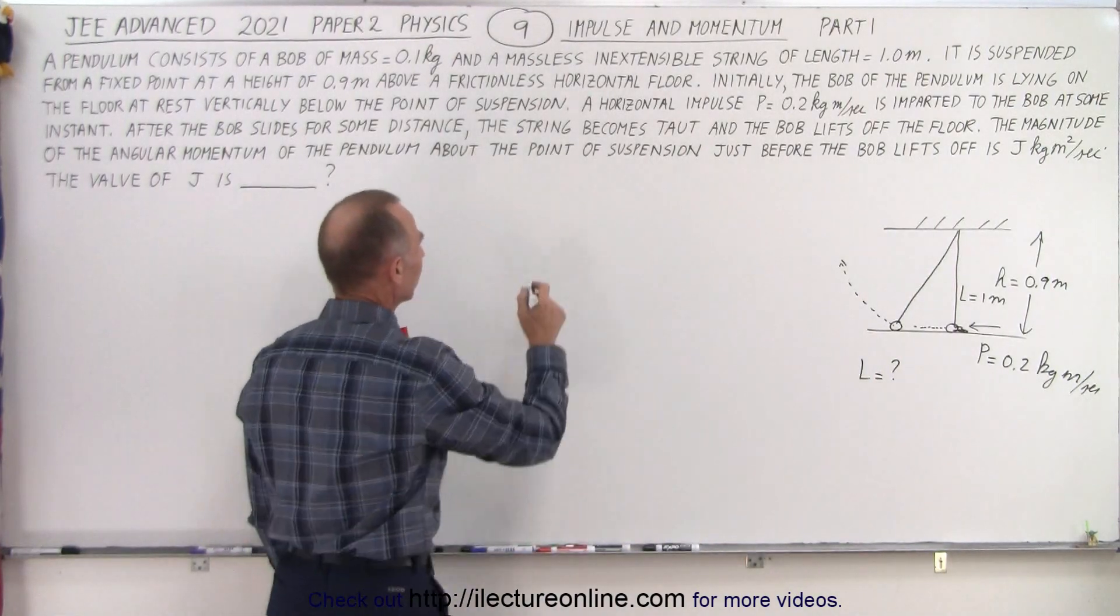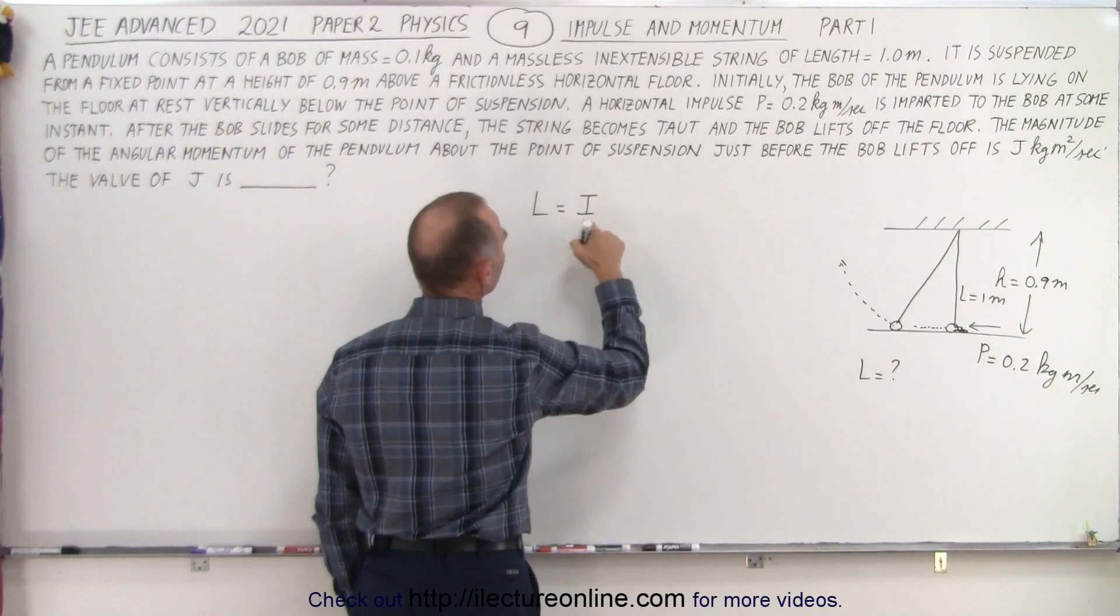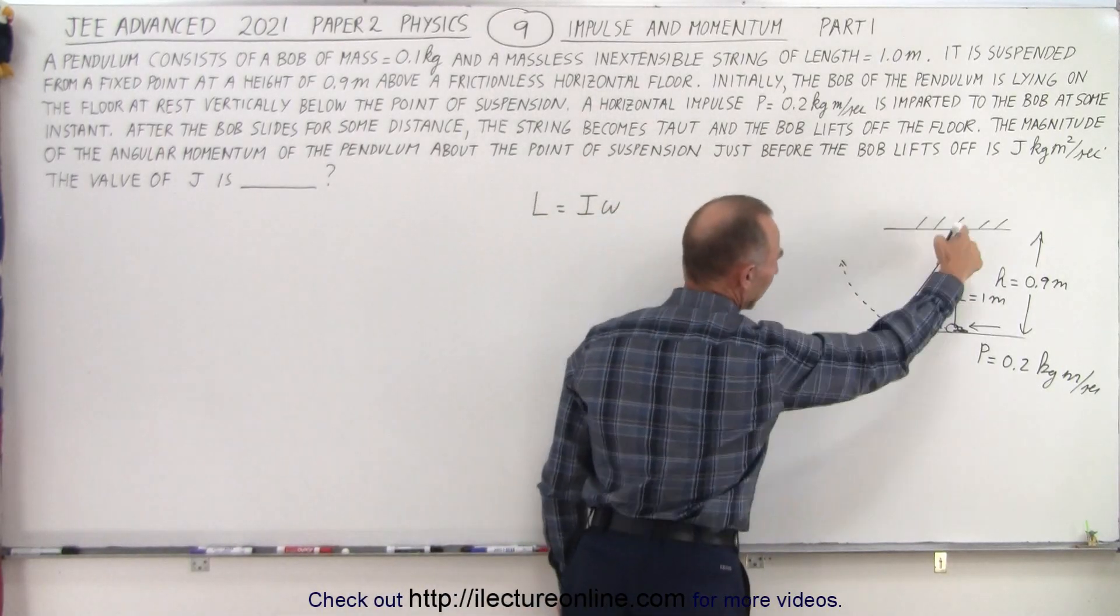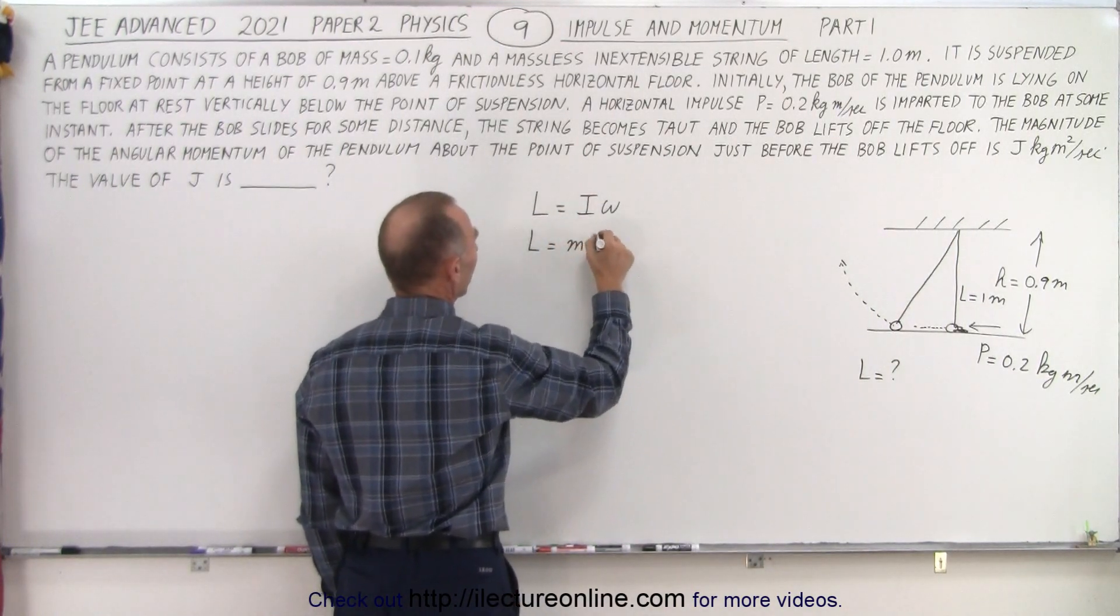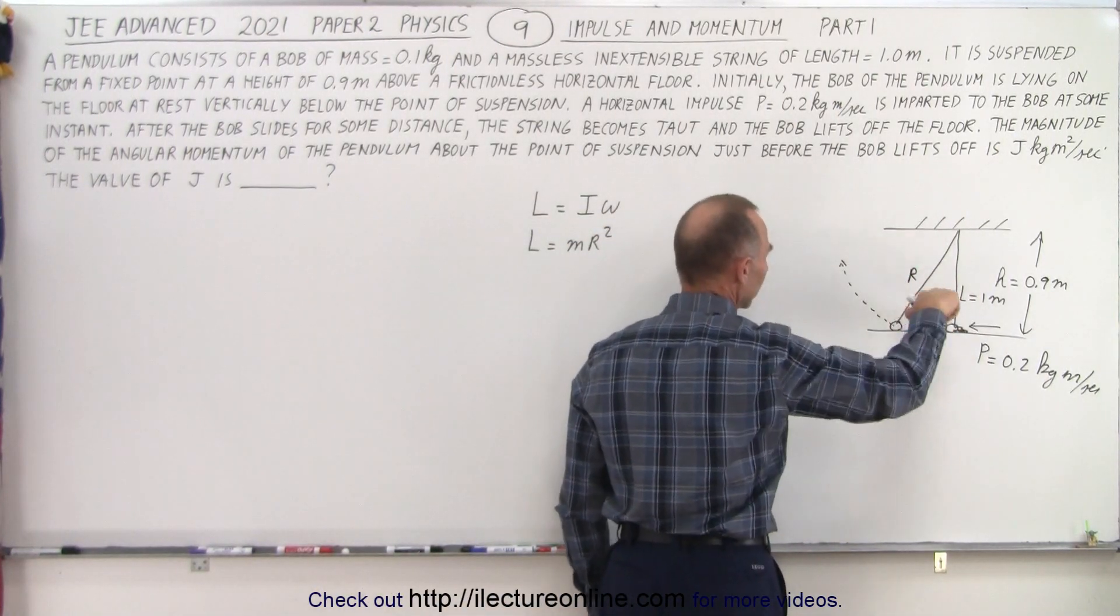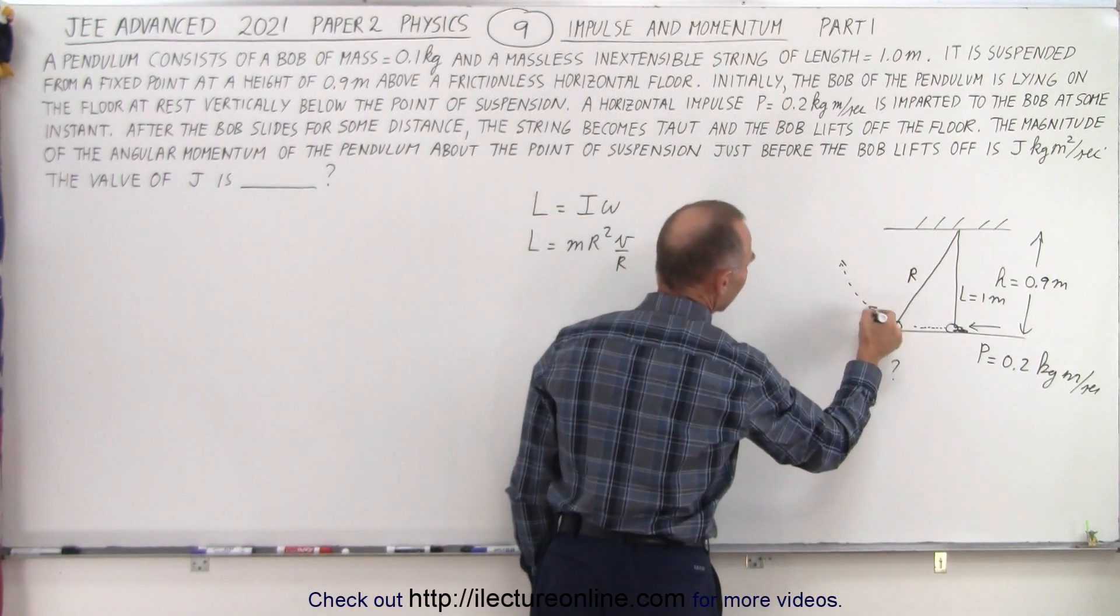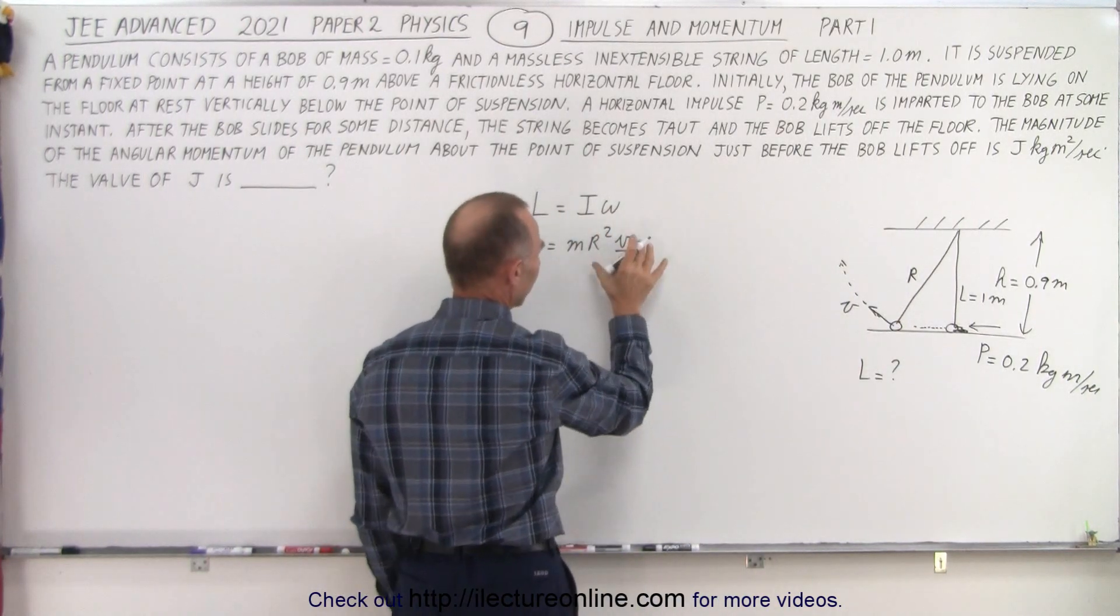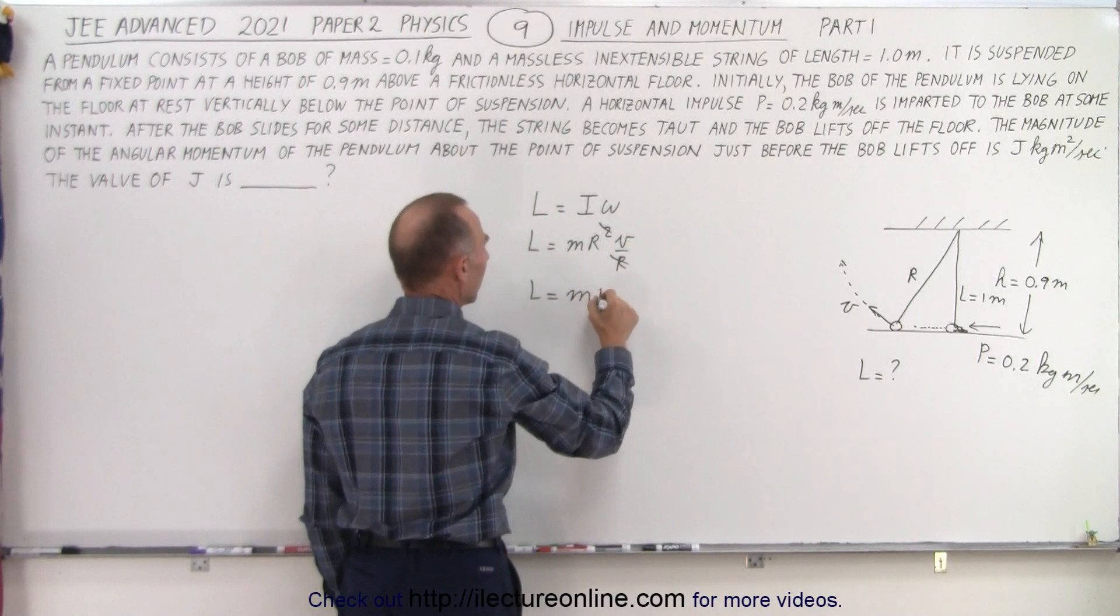What is the definition of angular momentum? The angular momentum is equal to the moment of inertia times the angular velocity. The moment of inertia of a pendulum where all the mass is at the very end is simply mr squared so L equals mr squared omega. We have v over r where v is the velocity at that moment. These r's cancel out so the angular momentum is equal to mrv.